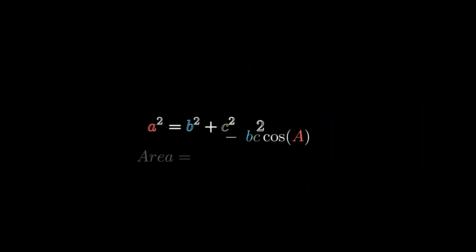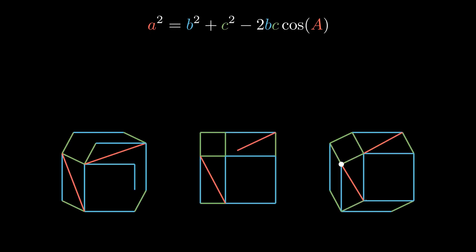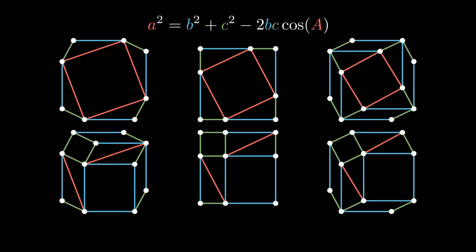So there it is again. a squared equals b squared plus c squared minus 2bc cosine a. And just like with the right angle case, the obtuse case and acute case can both be proven in one image each.